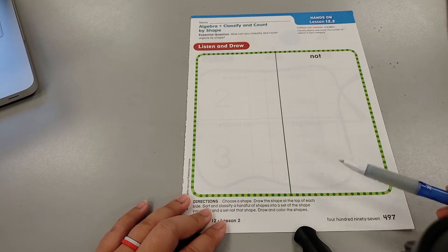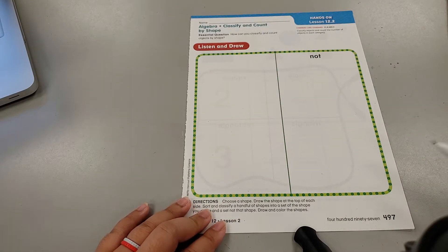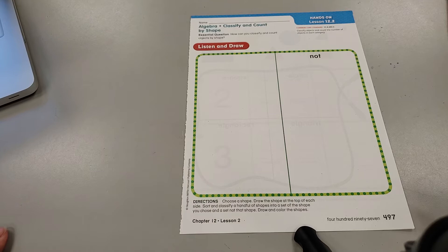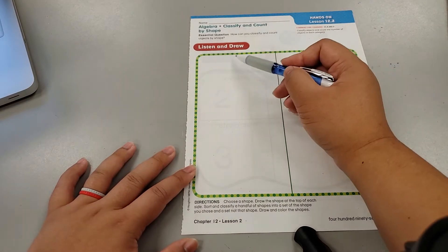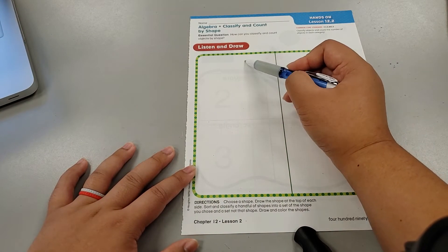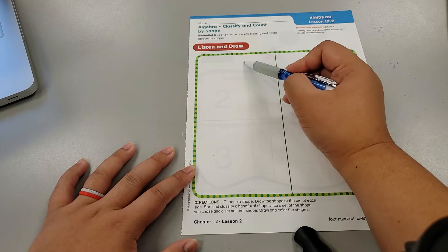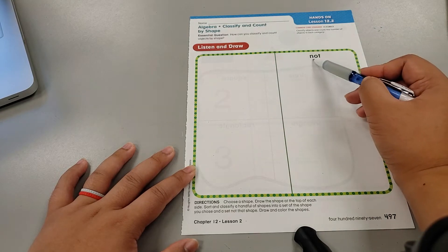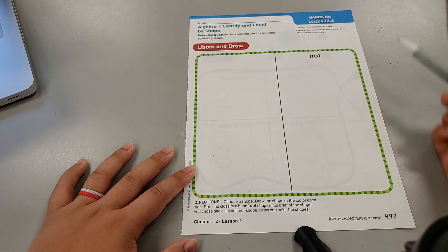By shape. So let's create a sorting mat for ourselves by choosing a shape. And you'll draw that shape at the top of the column, or at the top of the sorting space, and then we have our word here, NOT, and then you'll draw your shape again.